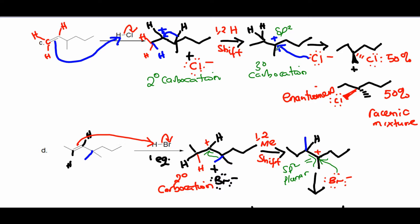Since the carbocation is sp2 hybridized, it is planar. An approaching nucleophile like Cl⁻ can attack from the top face or bottom face. Attack from the bottom face gives one structure with the methyl group as a dash; attack from the top face gives the other structure with methyl as a wedge. There is an equal 50/50 chance of attack from top and bottom, giving equal yield — a racemic mixture. Because the two structures differ in only one asymmetric center, they are enantiomers.